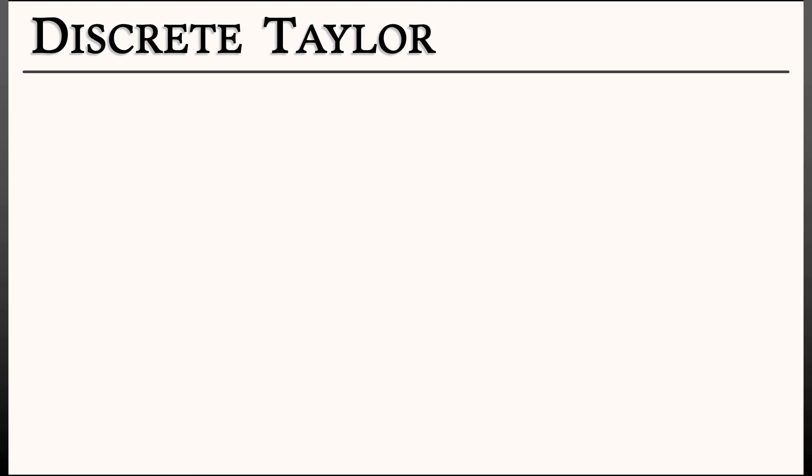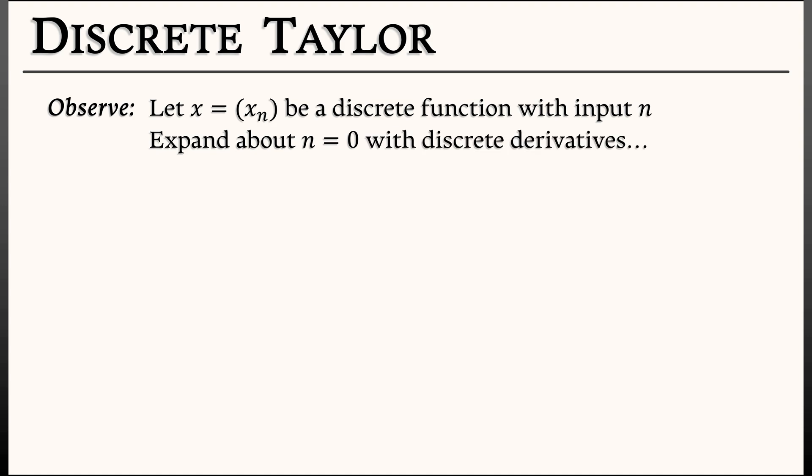So how would you do a discrete Taylor Expansion of a function? Let's say that x is a discrete function, that is, a sequence xn. What we want to do is expand about the origin using discrete calculus operators, things like forward differences. So if we know all the derivatives at the origin, can we say something about what happens later on in the sequence at xn? To evaluate xn, what I could do is take the n-fold shift operator, e to the n, apply that to x, evaluate at 0.